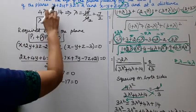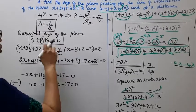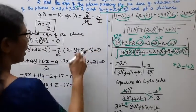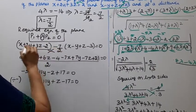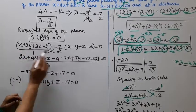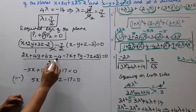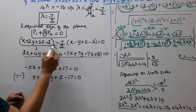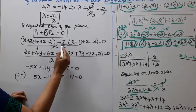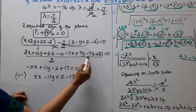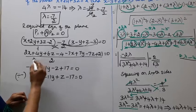Substituting lambda equals 7/2 back into P1 plus lambda times P2 equal to 0. Multiplying through by 2 as LCM: 2 into (x plus 2y plus 3z minus 2) plus 7 into (x minus y plus z minus 3) equal to 0. This gives: 2x plus 4y plus 6z minus 4, minus 7x plus 7y minus 7z plus 21 equal to 0.